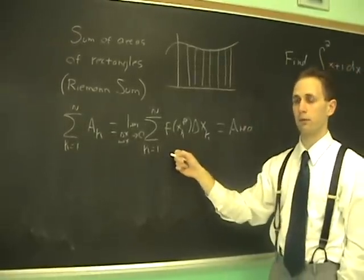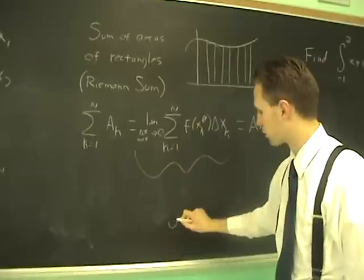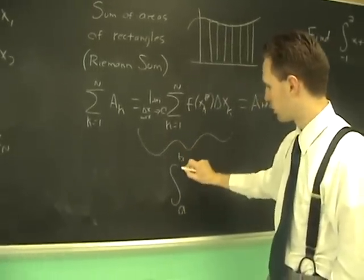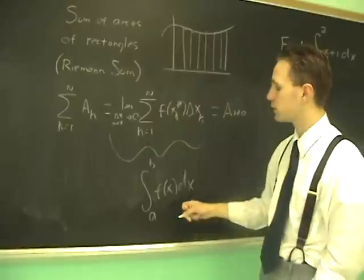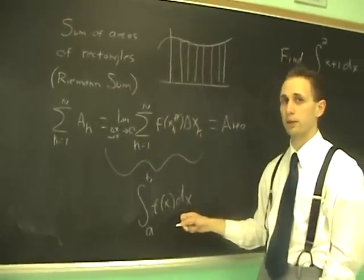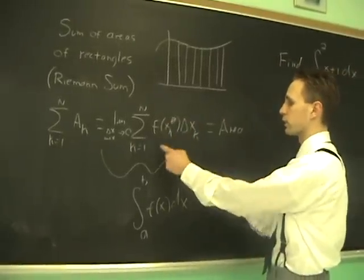This is defined to be this type of limit, and also this type of limit is what the definite integral means. When you see this formula for the definite integral, you should think it is a limit. It's this special kind of sum—it's an infinite sum of products.